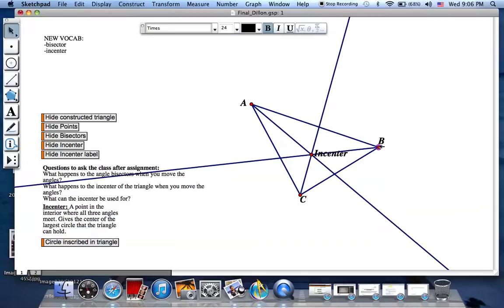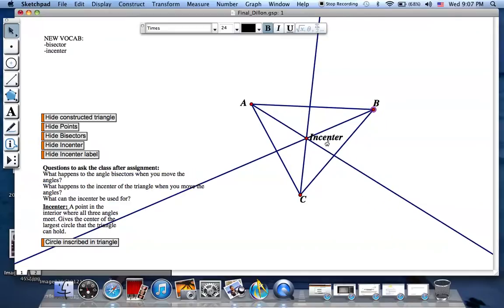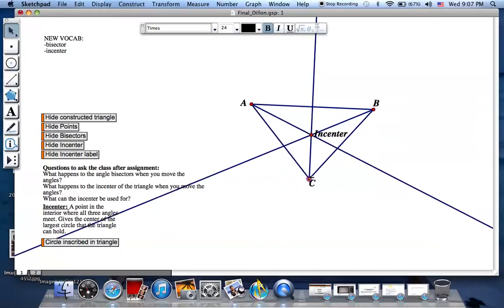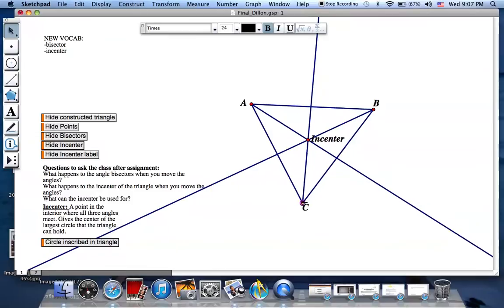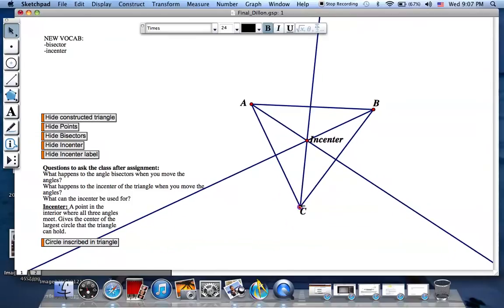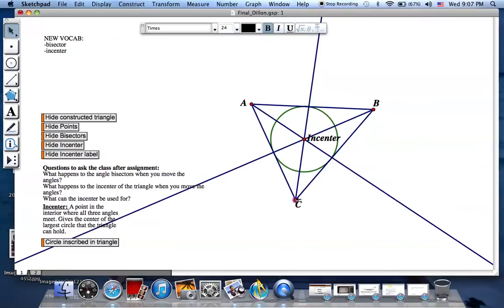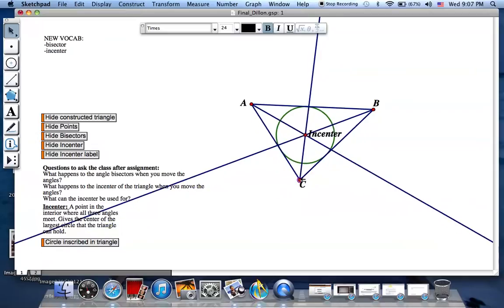Finally, we'll definitely go over what exactly the in-center is. And I'll discuss how it's the point of the interior where all the three angles meet. And this last fun little thing that we'll go over is we'll inscribe a circle within the triangle. And this gives them a better idea of exactly what in-center is.